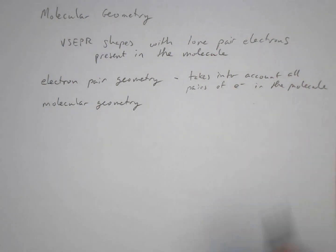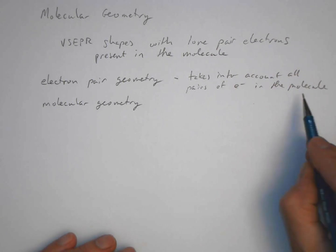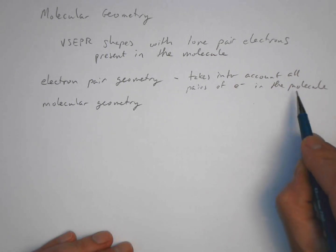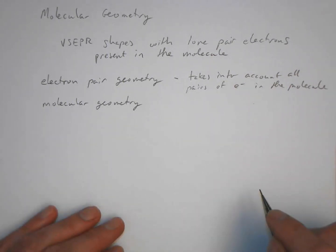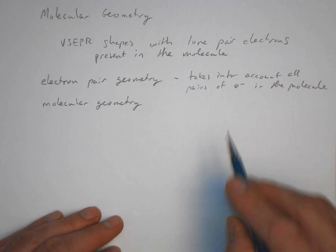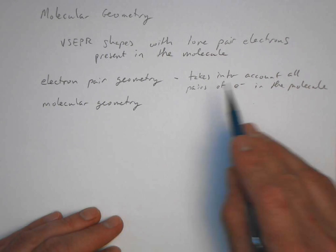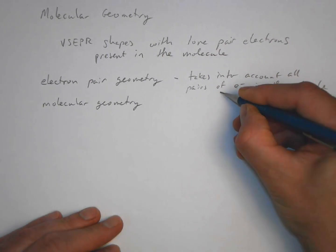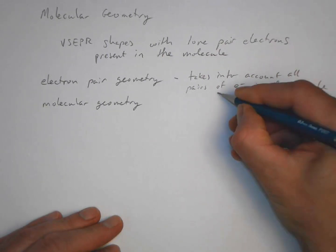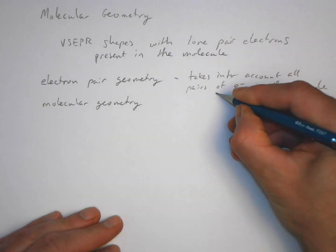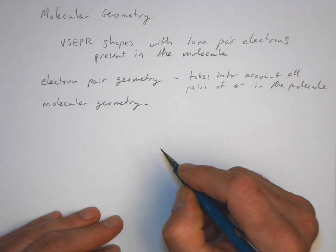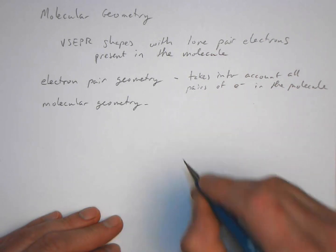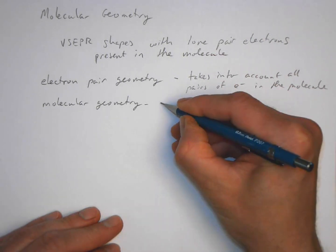The electron pair geometry takes into account all the pairs of electrons — this includes both bonding and non-bonding pairs. The molecular geometry, on the other hand, takes into account the positions of the atoms only.